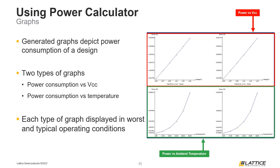The two graphs on the left side of this window display the power consumption in typical operating conditions. The two graphs on the right side display the power consumption for a design in worst operating conditions. We are now going to review the process for saving a Power Calculator project.